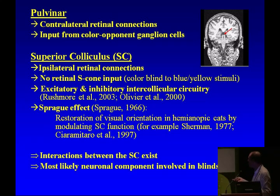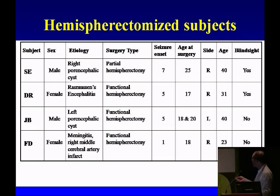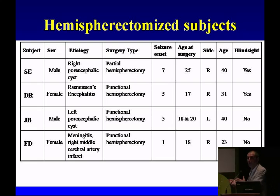There is an interaction that exists between the superior collicula, and this is what we used as a premise. We also thought this was the most likely neuronal component involved in blindsight, so we tried to demonstrate this. Parametric testing demonstrates there is no macular sparing and the subject reports being blind in half the visual field. We studied four subjects — three with right hemisphere removal and one with left.